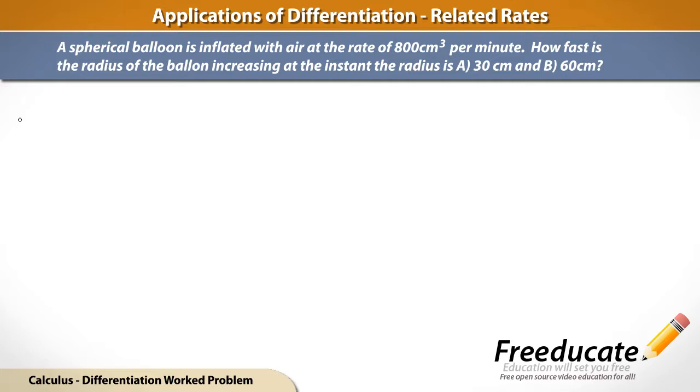So before we even go to try and attack part A or B, what we first want to do is just find some way to relate these rates. That's exactly what the problem says. So what we need to do is we need to find out what our dependent and independent variables are. So first off, what are we given? Well, we're given a spherical balloon that's being inflated with air. So when this balloon's being inflated with air, what's happening? Well, the volume is changing. So there's our first, that's our dependent, is volume.